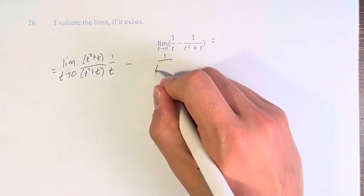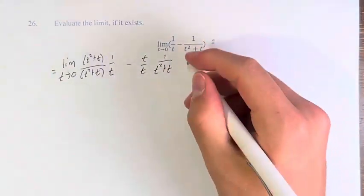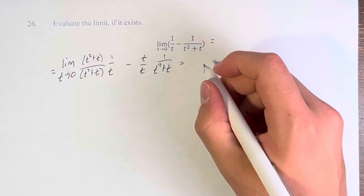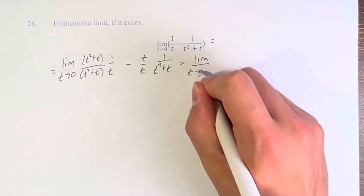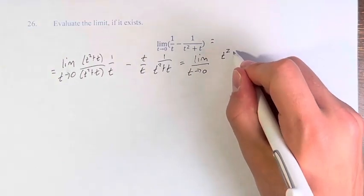What this is going to give us is the limit as t approaches 0 of t squared plus t times 1, which is just t squared plus t.